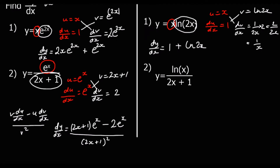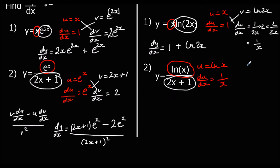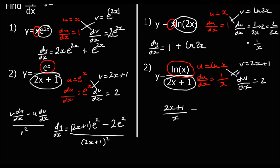Question 2 is a quotient rule question. Let u equals ln(x), so du/dx is 1 over x. And v equals 2x plus 1, so dv/dx is 2. Substituting into the quotient rule: v·du/dx gives (2x plus 1) over x, minus u·dv/dx gives 2·ln(x), all over v squared, which is (2x plus 1) squared. We'll leave it like that.